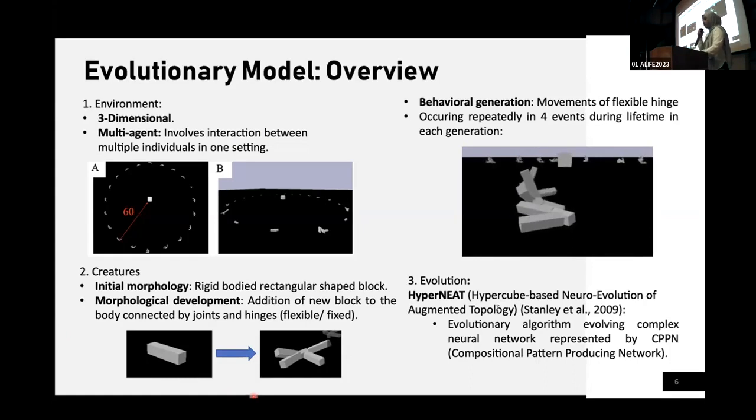We are using hyperneat. Hyperneat is the evolutionary algorithm commonly used to evolve a more complex neural networks represented by CPPN.